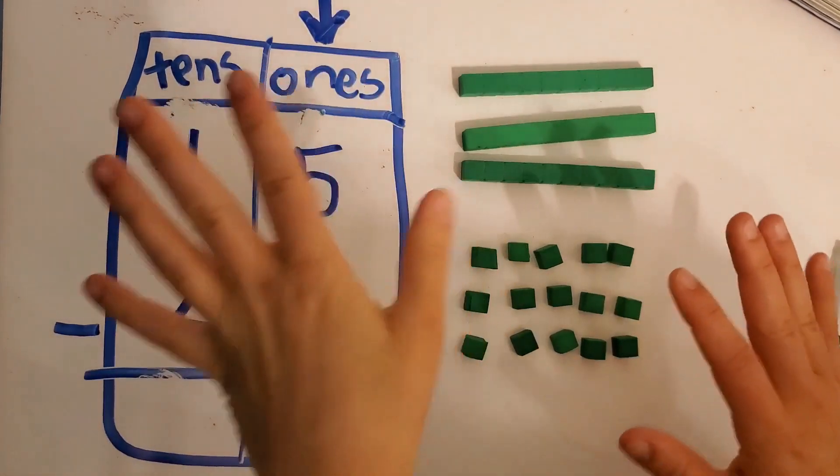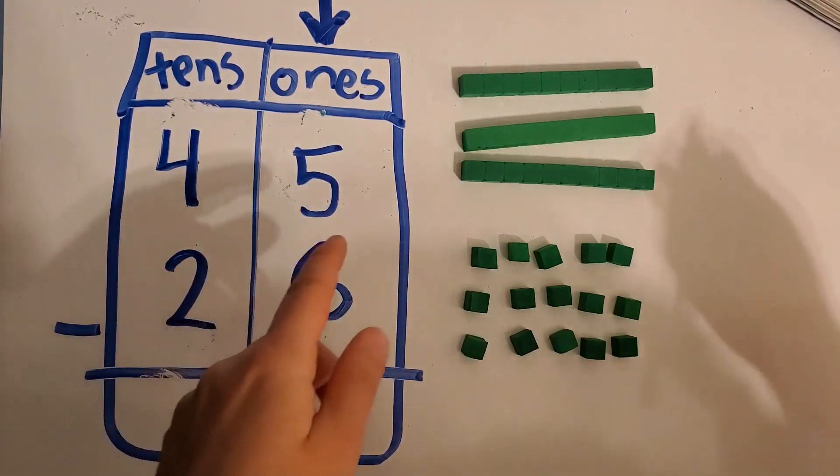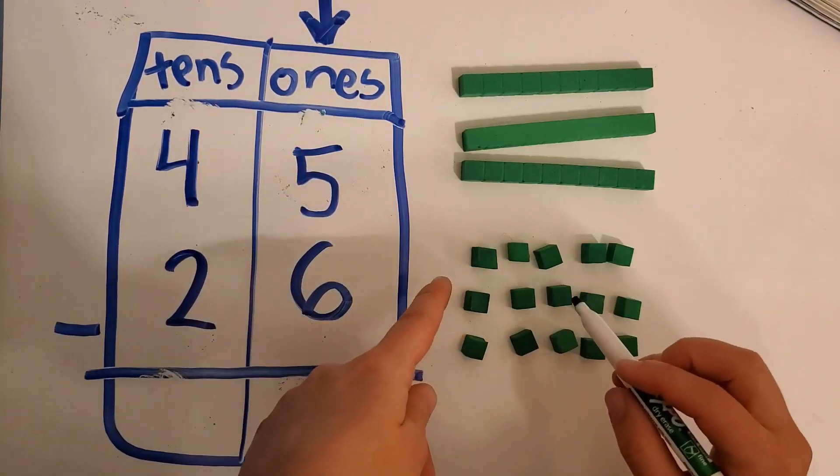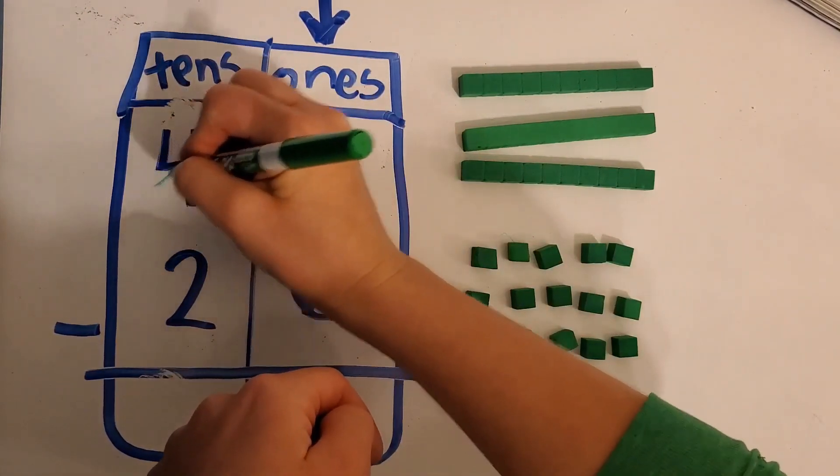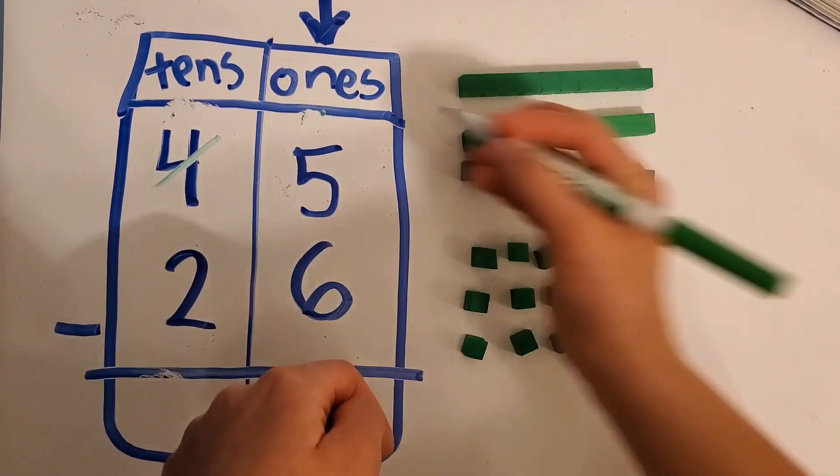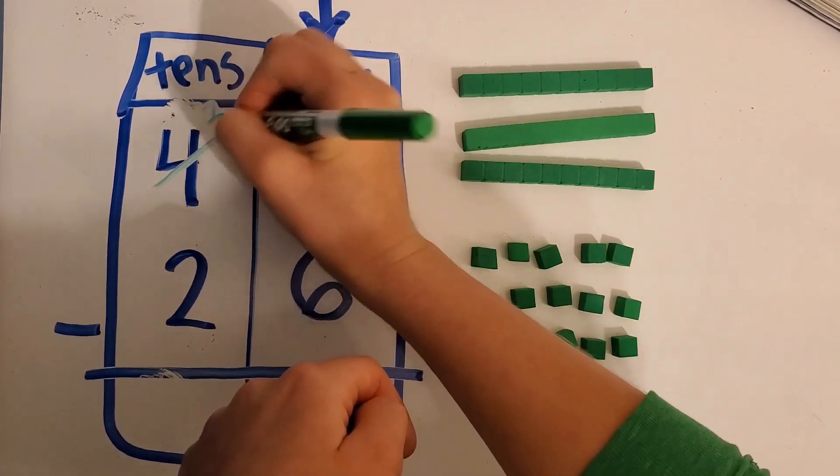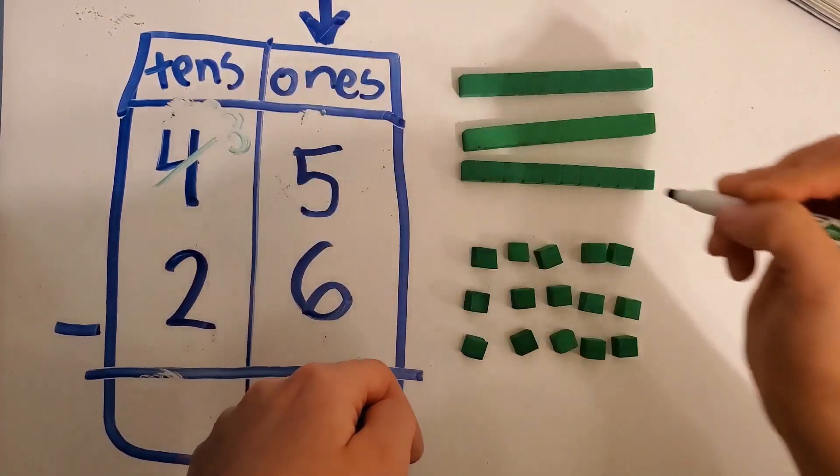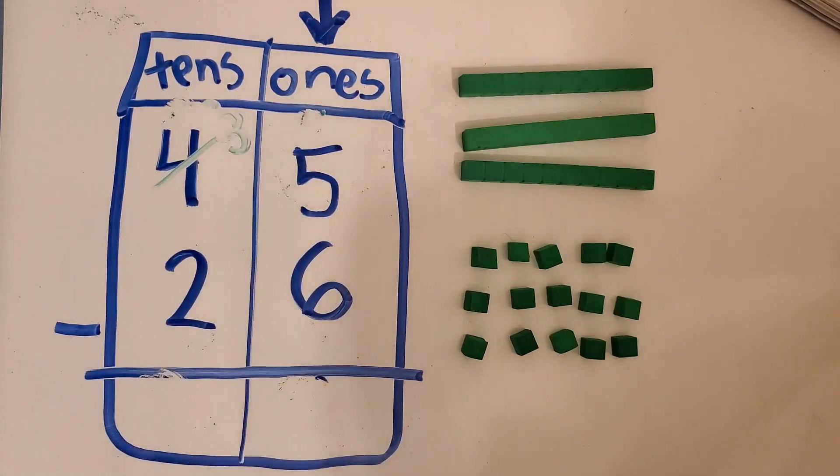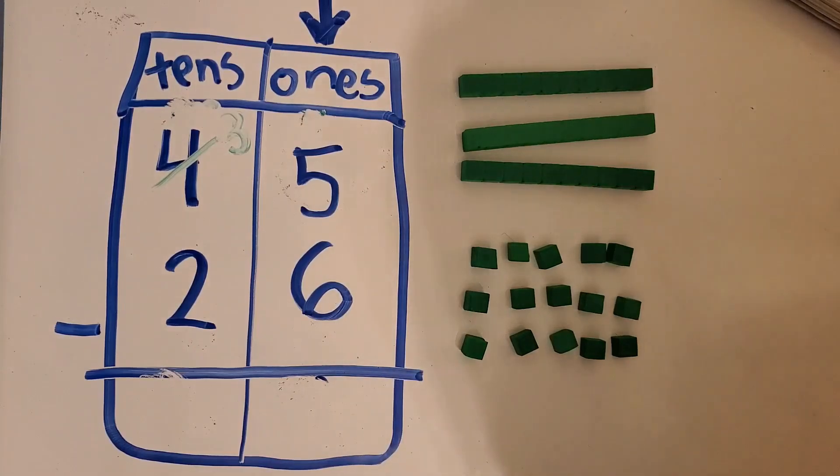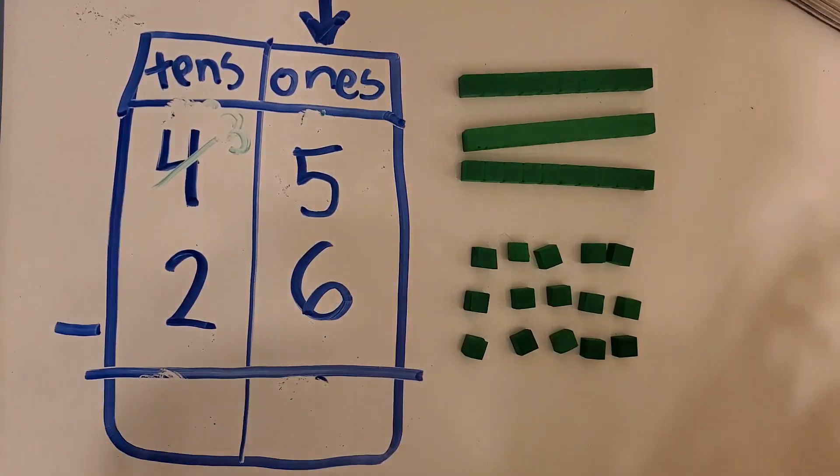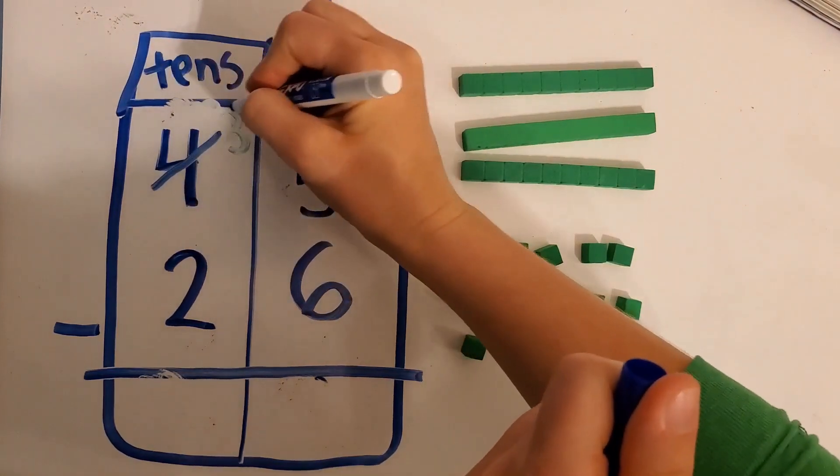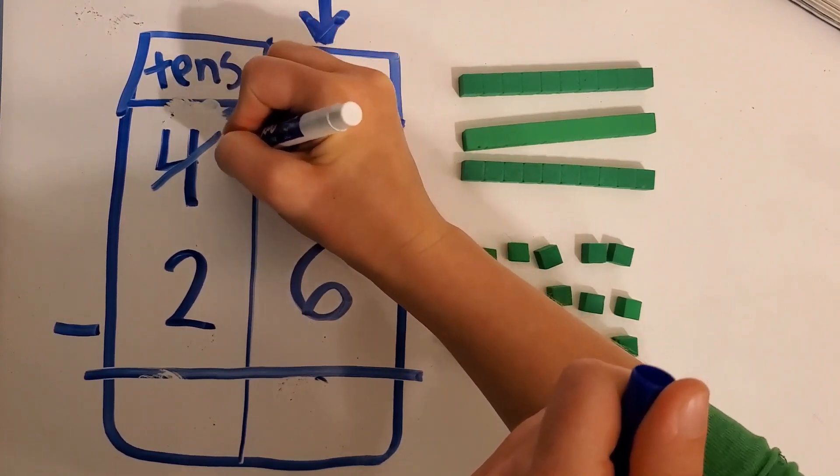Remember, we can't subtract yet. We have to change it on our chart. So we regrouped. We took away one ten. So now how many do we have? Three. We have three.